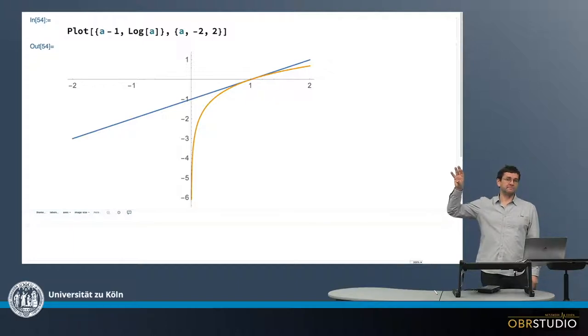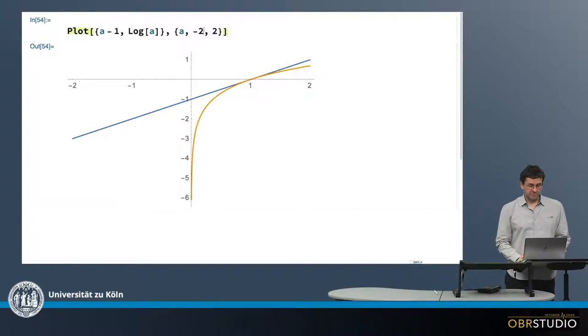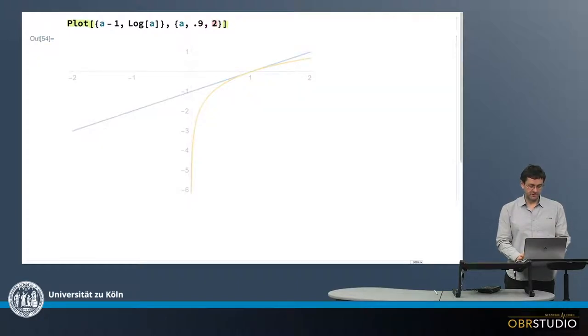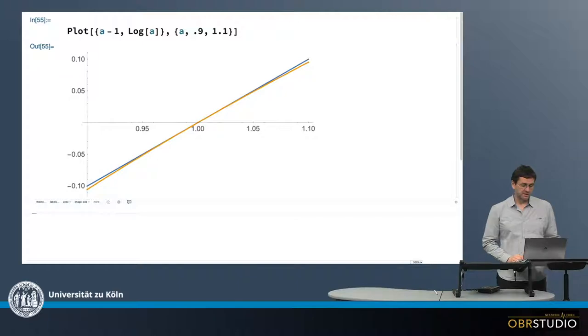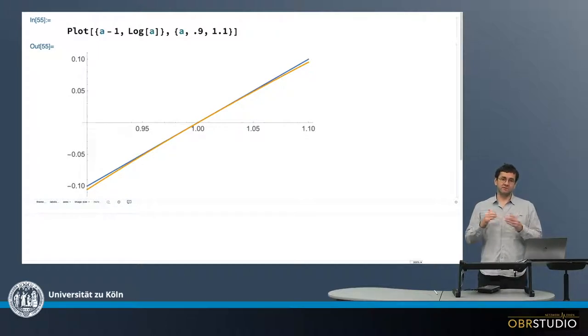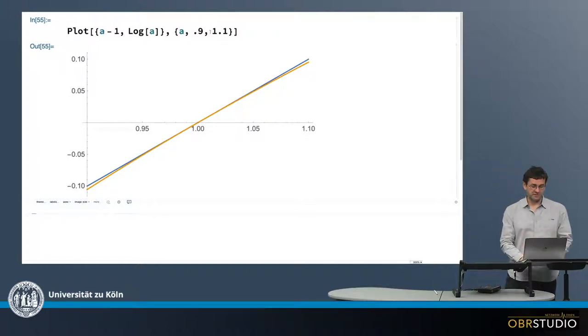However, also, around an A value which is on the x-axis of 1, the two functions are quite similar. So I make this interval much smaller, only between 0.9 and 1.1. And here we see that in this small interval, these two functions are really rather similar.